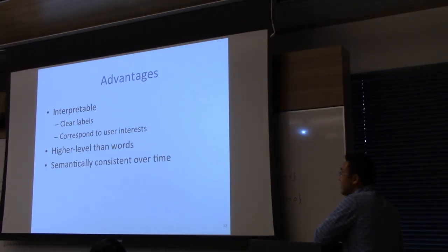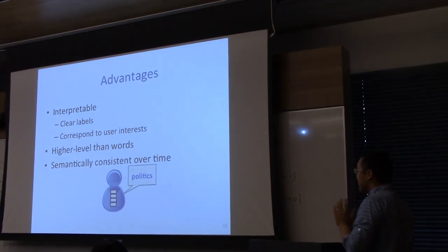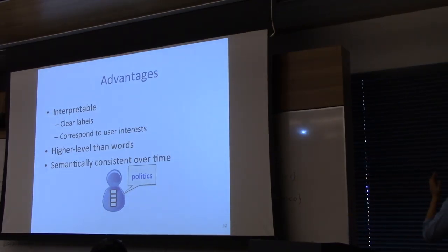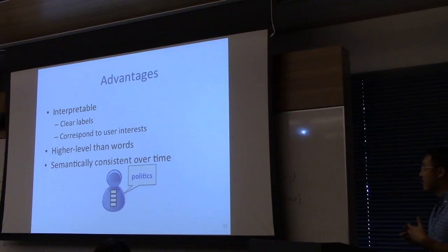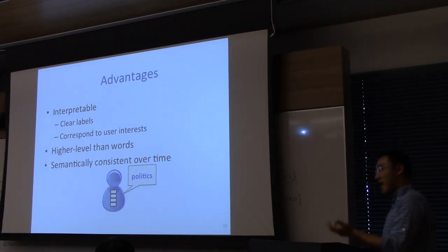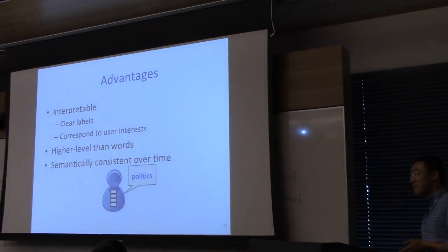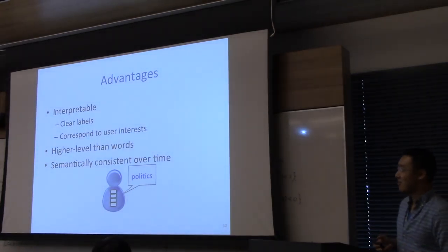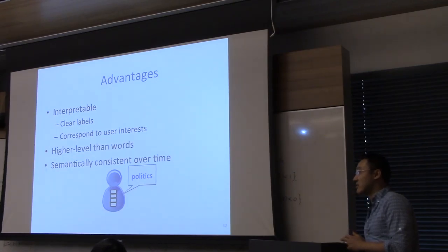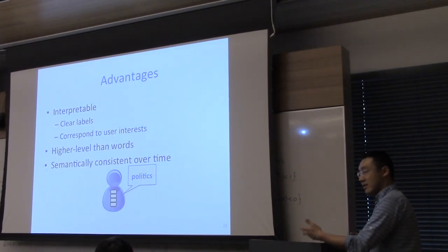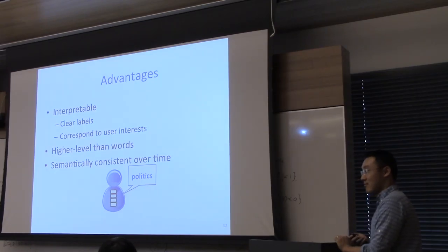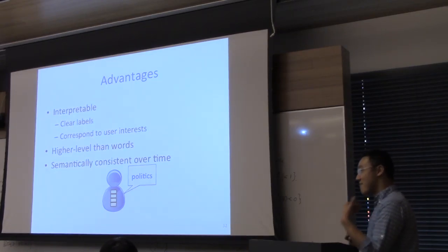It turns out that you can train these badges, and the meaning of words associated with a badge can drift over time. Consider politics — if you identify as liberal or conservative, the set of words associated with those badges might be very different in November than they were last year, because current events change. But the fact that you identify as liberal or conservative tends not to change over time. So we can actually learn a time-varying dictionary or time-varying dimensionality reduction.